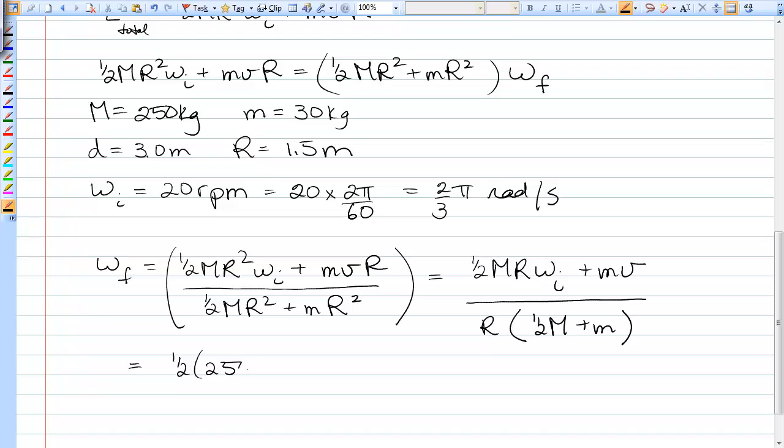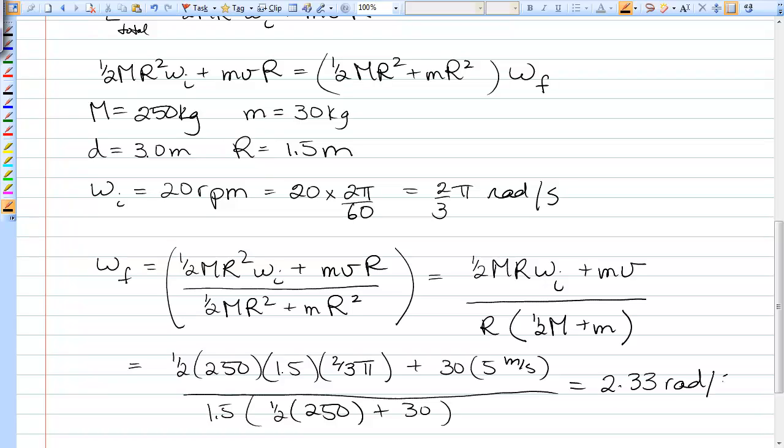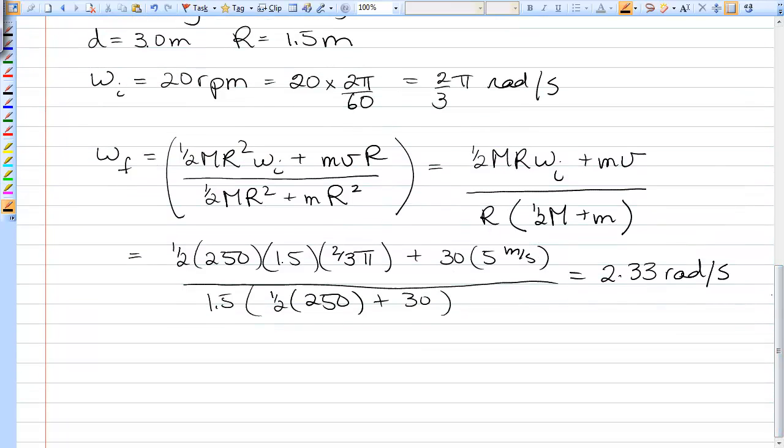So let's sub in the numbers. Don't forget to use rads per second. And that's the speed of 5 meters per second for V. And the radius times half of 250 plus 30. And if you put all those numbers in, you come up with an omega in rads per second. And that works out to 2.33 rads per second. But you have to put that into RPM because that's what the question asks. So to convert back to RPM, we simply multiply by 60 and divide by 2π. And that gives us 22 RPM.